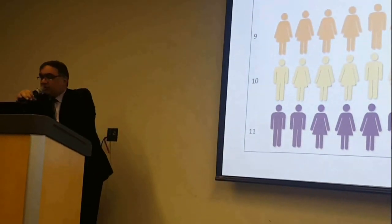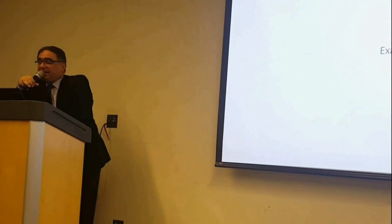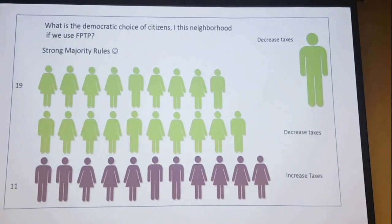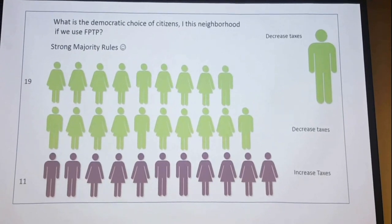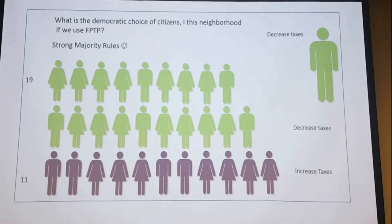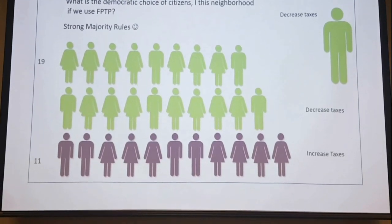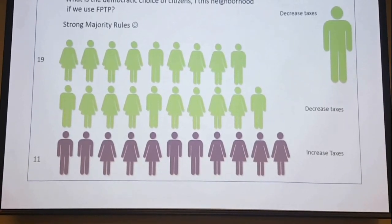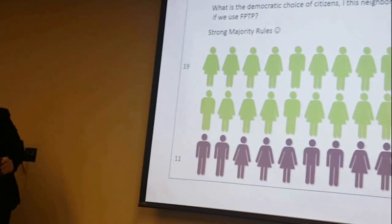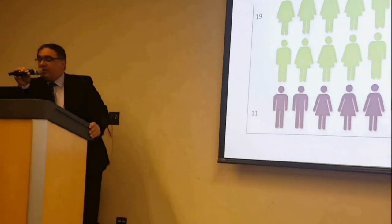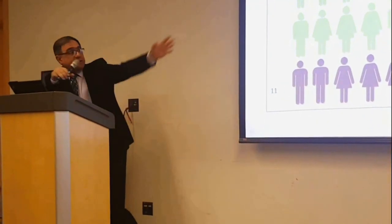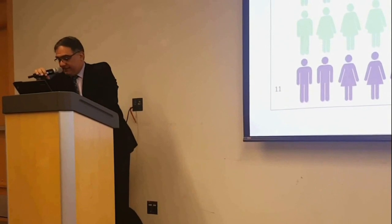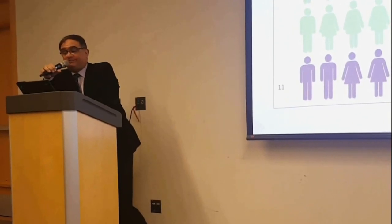The solution is simple: we can simply ask people their choices. Here is a more realistic example that can happen in any society. There is a strong majority of people who want to decrease taxes and a minority that wants to increase taxes. Basically, any voting system you choose will lead to the decrease-taxes candidate being elected when there are only two alternatives — first-past-the-post works very well.